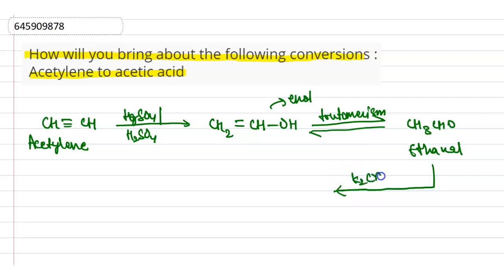K2Cr2O7 is a good oxidizing agent, then our product will be acetic acid.